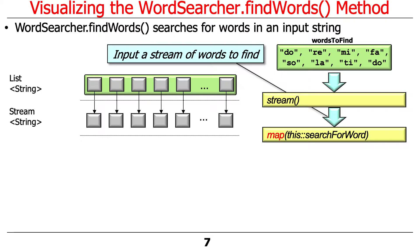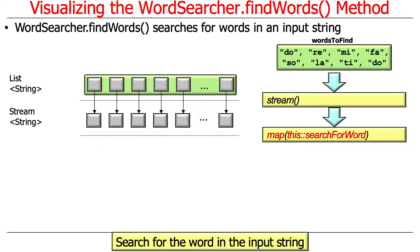Then we're going to use the map aggregate operation — the intermediate operation map. As we'll see in more detail later, map can be used to transform its input to some output, potentially changing the type. We're going to pass in the input stream of words defined and call the searchForWord method reference. So the method reference searchForWord gets passed in, and for each element in the stream, searchForWord is called on that element — the element being the string, which is the word defined. So for all the words defined, searchForWord is called on each word.